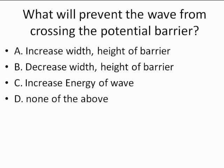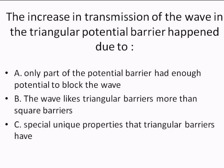The second question is: The increase in transmission of the wave in the triangular potential barrier happened due to... A. Only parts of the potential barrier had enough potential to block the wave. B. The wave likes triangular barriers more than square barriers. C. Special unique properties that triangular barriers have.